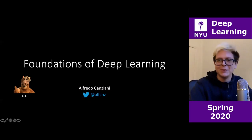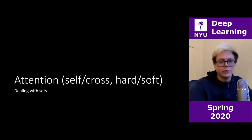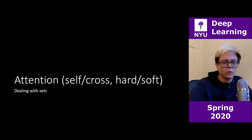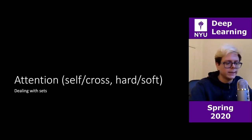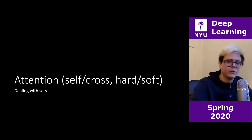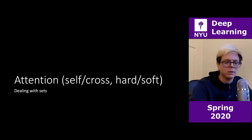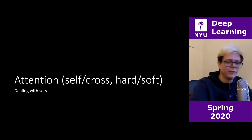Today we're going to be talking about attention. Specifically, there are two types: self-attention or cross-attention, and hard attention or soft attention. Generally when we talk about attention we're dealing with sets. As a small preview, transformers are made of attention modules — transformers map sets to sets. They don't really deal with sequences; a sequence can be thought of as an ordered set, but they don't necessarily need to have order.